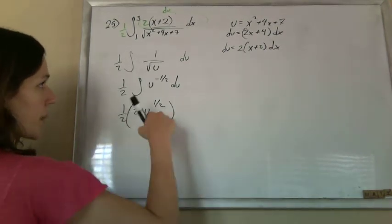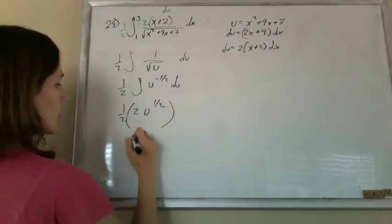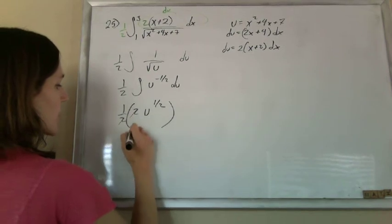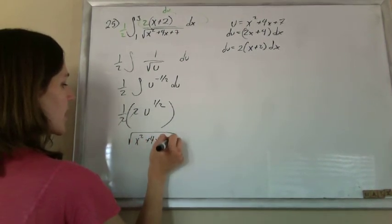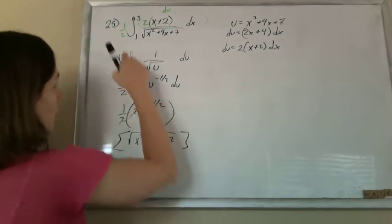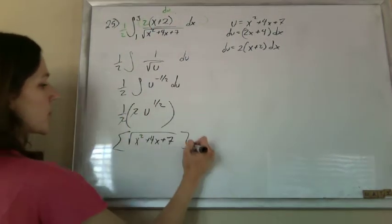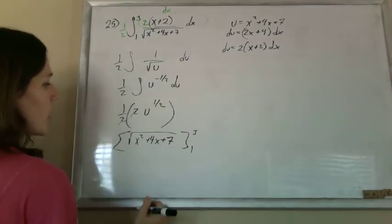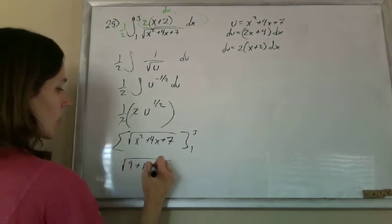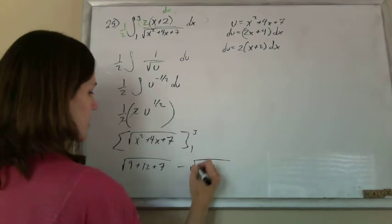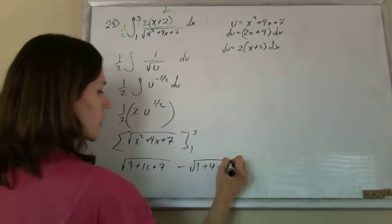If I plug back in my original u, the 2's cancel, I get the square root of x squared plus 4x plus 7. And I'm going to take that from my original limits, which were in terms of x from 1 to 3. So if I plug in the 3, I get 9 plus 12 plus 7 minus the square root of 1 plus 4 plus 7.